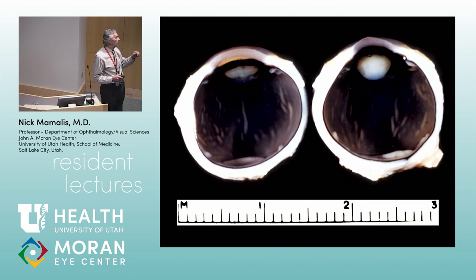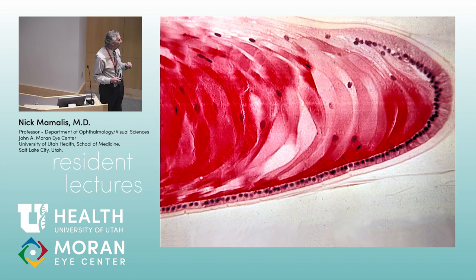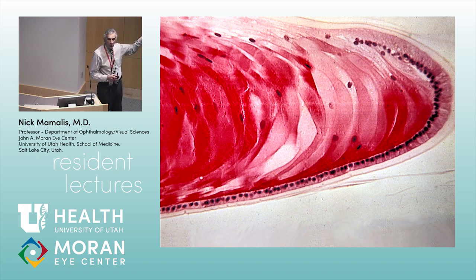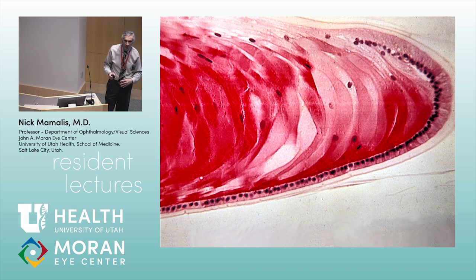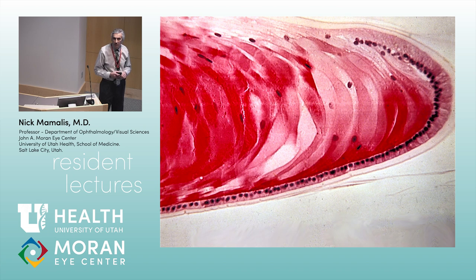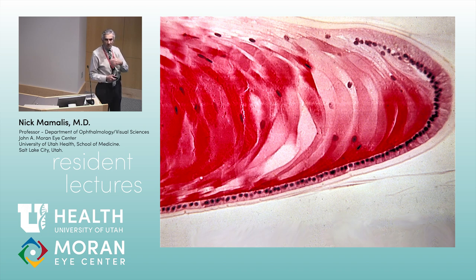With congenital rubella you need to remember that the nuclei are retained within the lens cells more than you would normally see. When you look at the pathology, those nuclei are retained. You'd need light microscopy to see it — you wouldn't be able to see it with the slit lamp or grossly.